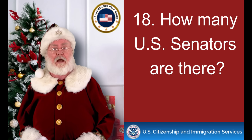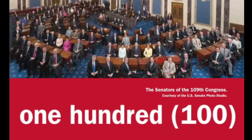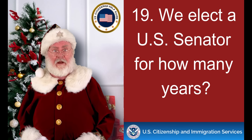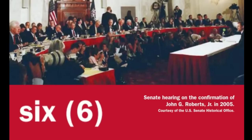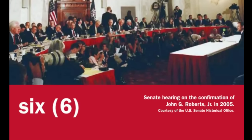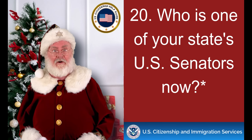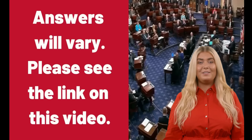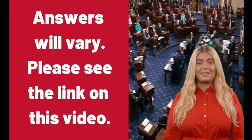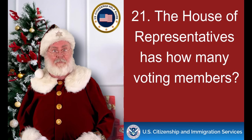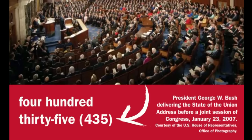How many U.S. Senators are there? One hundred. We elect a U.S. Senator for how many years? Six. Who is one of your state's U.S. Senators now? Answers will vary. The House of Representatives has how many voting members? Four hundred thirty-five.